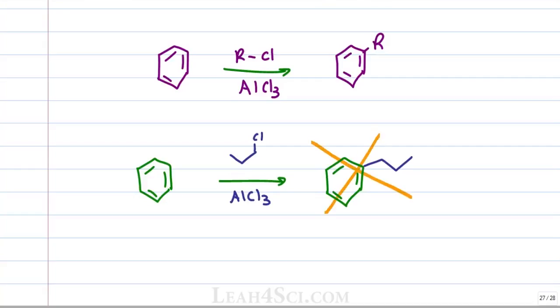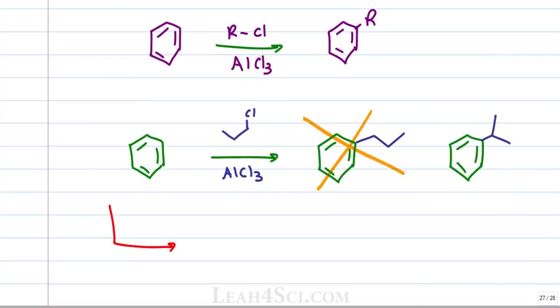Instead because of the carbocation intermediate you're going to get a carbocation rearrangement and your product instead is going to be an isopropyl group adding to benzene. To avoid a rearrangement, you want to do a Friedel-Crafts acylation reaction where you use an acyl chloride instead of an alkyl chloride with the same AlCl3 catalyst.